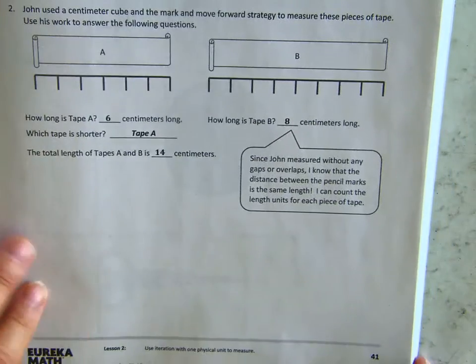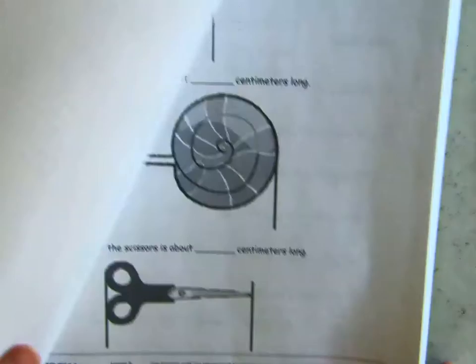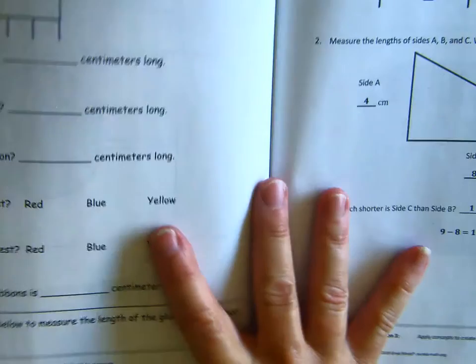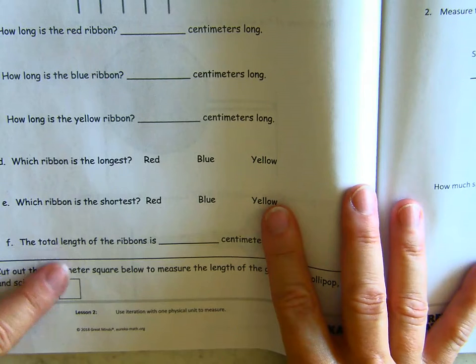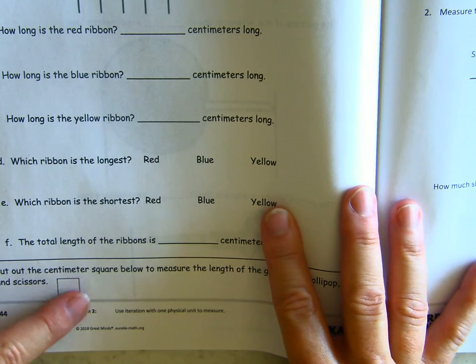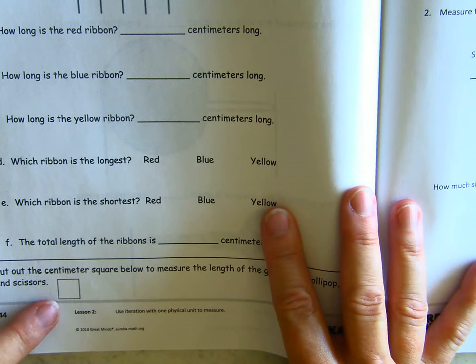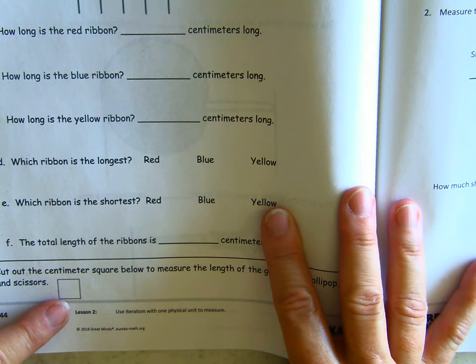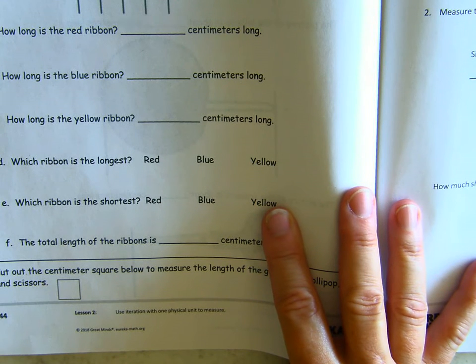So if you would turn from page 41 to page 44, here at the bottom of the page is this little square. So we are going to cut out this square, and this is what we are going to use to measure today. So I'm going to pause the video while I do that. If you need to pause, you may pause as well.